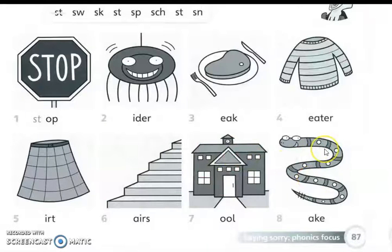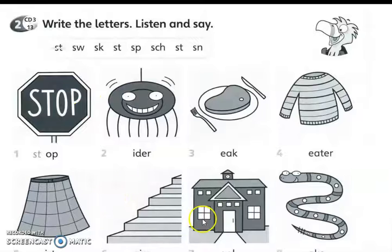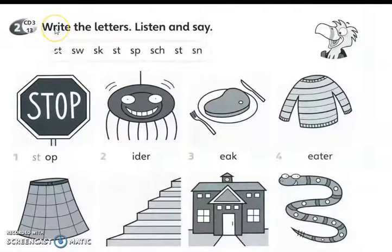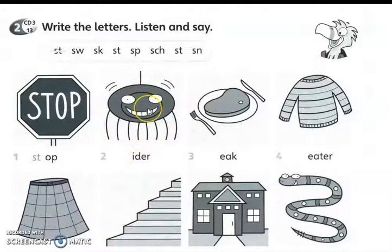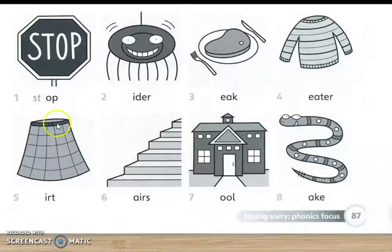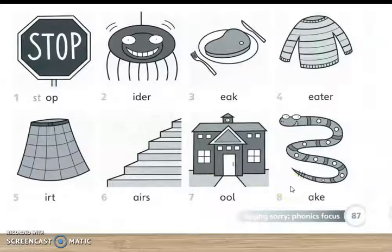And the last one is snake. Let us listen to the audio given to you. Workbook page 87, activity 2 — Write the letters. Listen and say. 1. Stop. 2. Spider. 3. Steak. 4. Sweater. 5. Skirt. 6. Stairs. 7. School. 8. Snake.